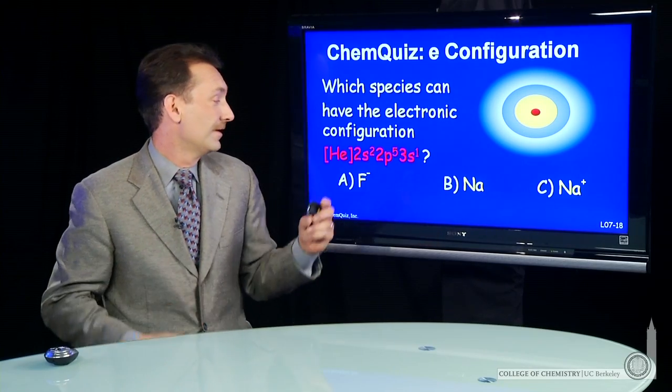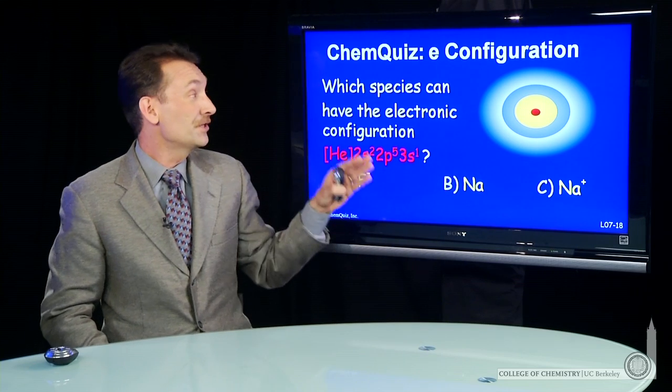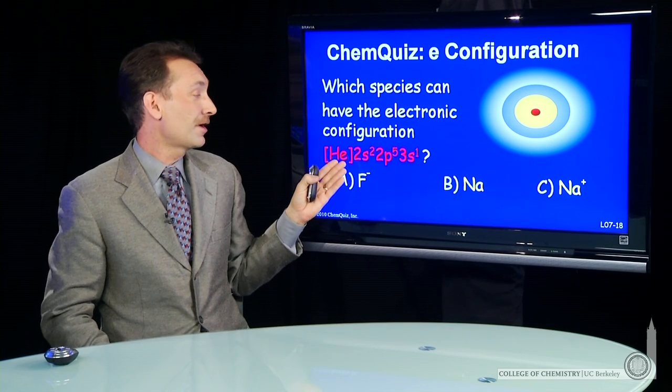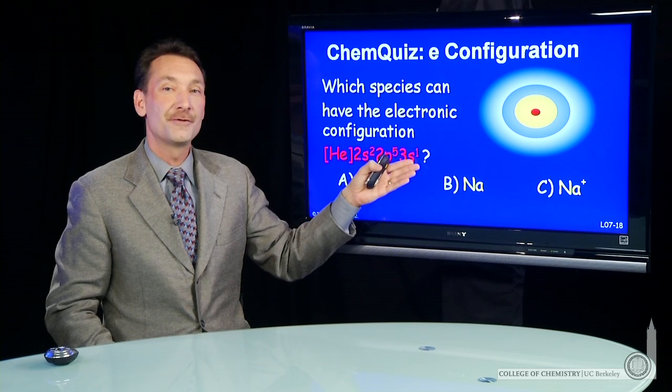Let's look at some electronic configurations. Fluorine minus, sodium, or sodium plus. Which of those three can have the electronic configuration helium 2s2, 2p5, 3s1?